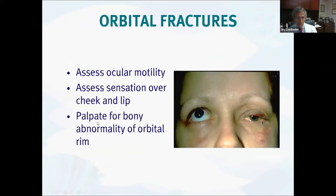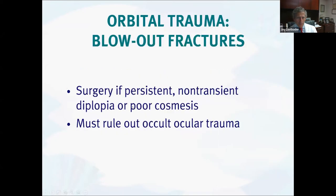Orbital fractures: assess ocular motility — this patient's left eye can't elevate at all due to entrapment of the inferior rectus muscle within the fracture. Assess sensation over the cheek and lip to look for involvement of the infraorbital nerve, and palpate — usually if there's a fracture you can feel it over the inferior orbit. We only do surgery on these patients if they have persistent symptoms, most particularly double vision from muscle entrapment, or if the eye has significantly sunken in.